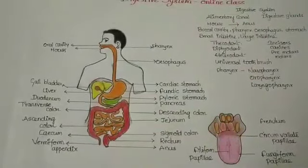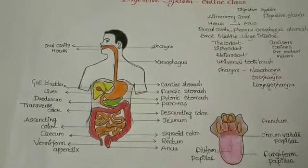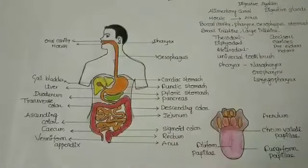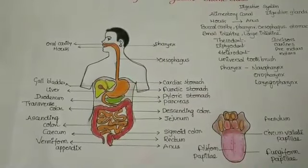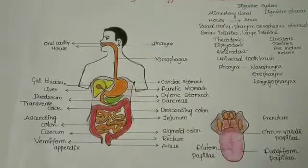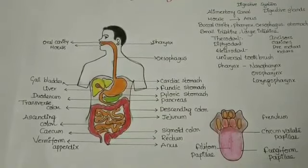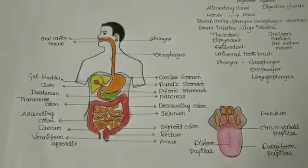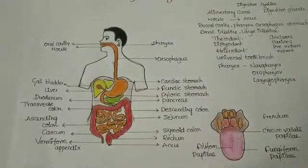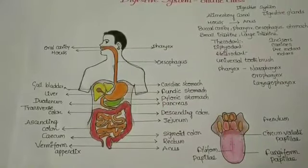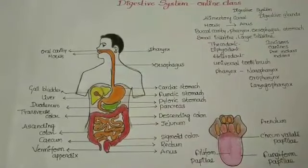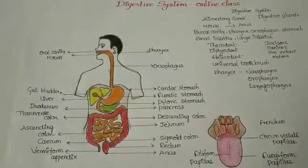The stomach is a wide J-shaped muscular bag-like structure located in the upper left portion of the abdominal cavity. It has three major parts: the cardiac region, the fundic region, and the pyloric region. The esophagus opens into the cardiac stomach; the middle large region is the fundic region; and the posterior pyloric region opens into the small intestine.